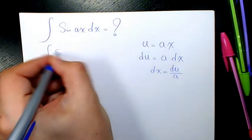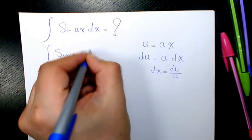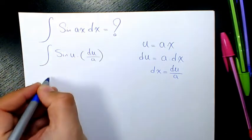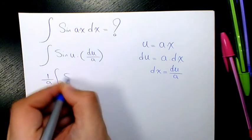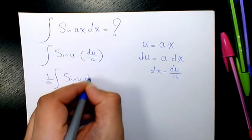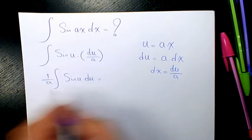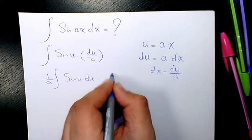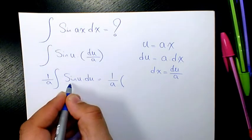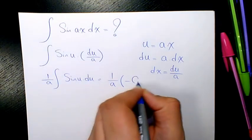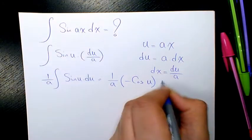Substituting here, it's going to be sin(u) times du over a. We take one over a out, so it becomes the integral of sin(u)du. When you integrate it, it's going to be one over a. The integral of sin(u) is negative cos(u) plus c.